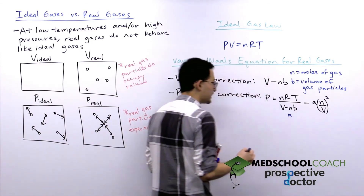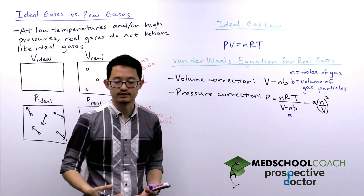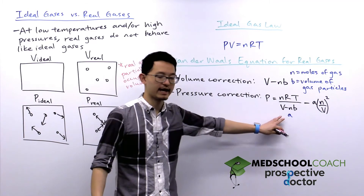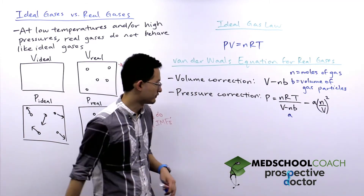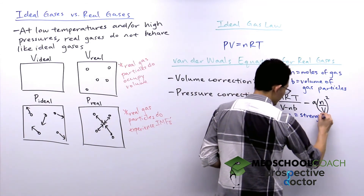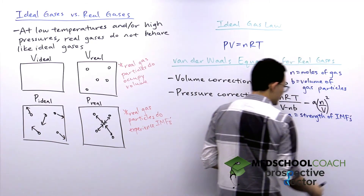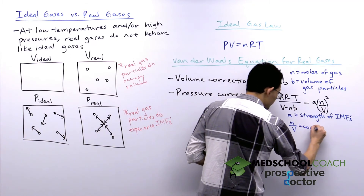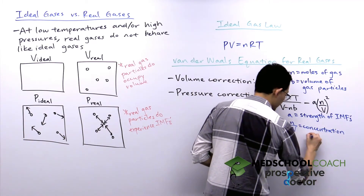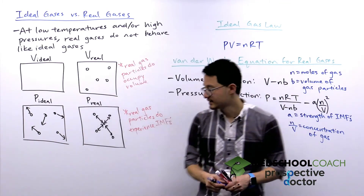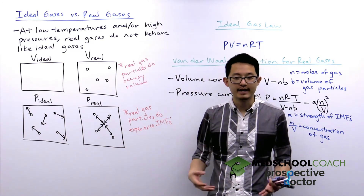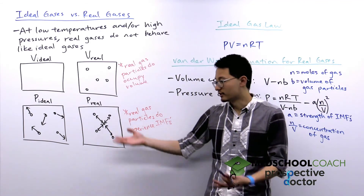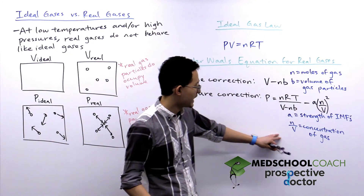Here, a is a constant related to the strength of the attractive intermolecular forces. For example, molecules that can form hydrogen bonds will generally have a greater a value than molecules that only have London dispersion forces. The term n over V represents moles per volume, which is the concentration of gas particles. The pressure decrease depends on the number of interactions, and the greater the concentration of gas particles, the more interactions you have and the more pressure is decreased.